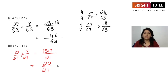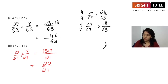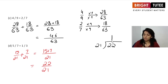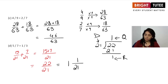Since 22/21 is an improper fraction, we must convert it to a mixed fraction. Doing the division: 21 goes into 22 just once, with a remainder of 1. So we write the quotient first, then remainder over divisor. The final answer is 1 and 1/21.